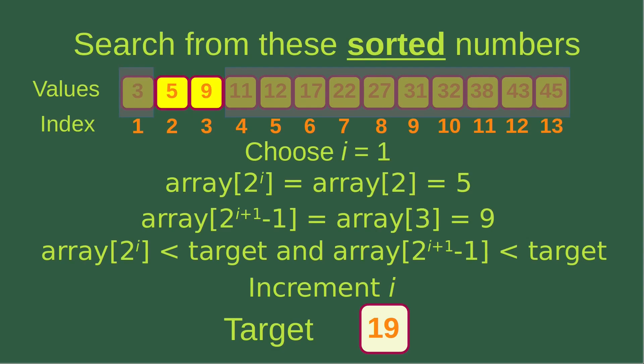Now we choose i equals 1. When i equals 1, we find the second element, which is equal to 5, and also the third element, which is equal to 9. We see that both numbers are actually smaller than our target, so this particular portion isn't able to contain our target. That means we have to increment i to find out another interval.